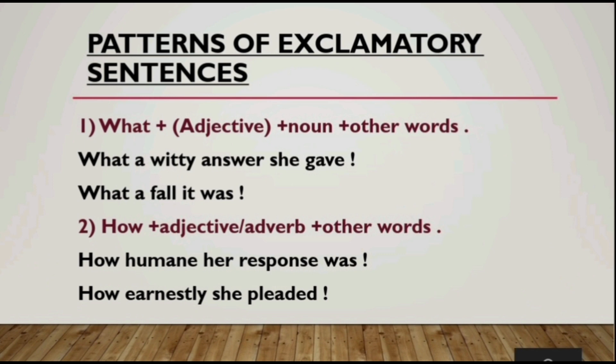The first pattern is: What + adjective + noun + other words. First there should be 'what,' then having an adjective is optional, then a noun, and some other complementary words. For example, 'What a witty answer she gave' — here 'witty' is an adjective, 'answer' is a noun, and 'she gave' are the other words. Next example: 'What a fall it was' — this does not have an adjective, so having an adjective is optional. This was the first pattern.